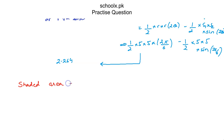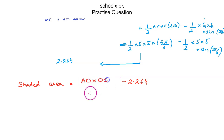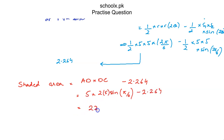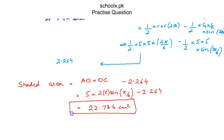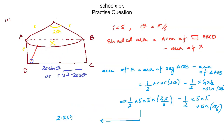For the shaded area: area of rectangle ABCD minus area of region X. The rectangle area = AD × DC = R × 2R sinθ = 5 × 2 × 5 × sin(5π/6). Then subtracting 2.264 gives a final shaded area of approximately 22.736 square centimeters.